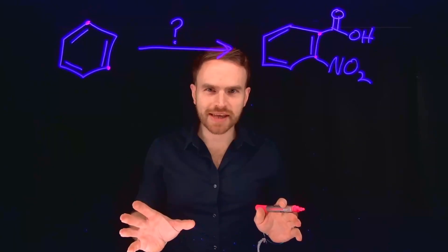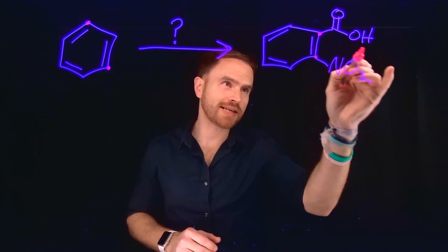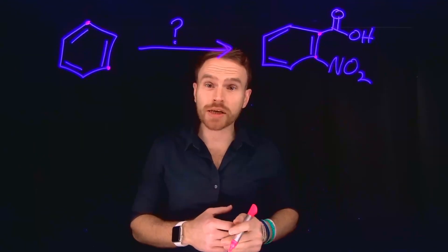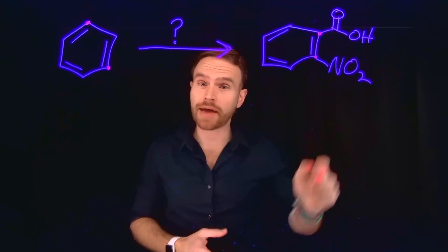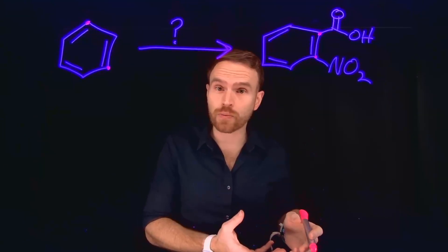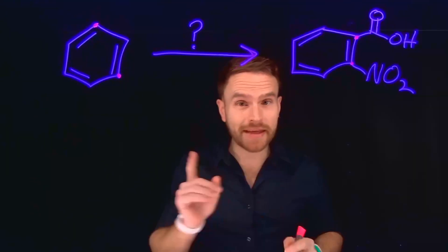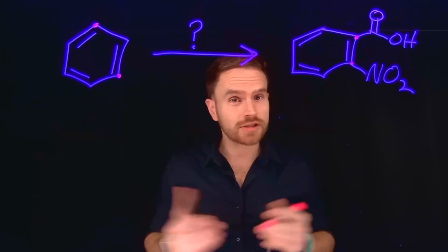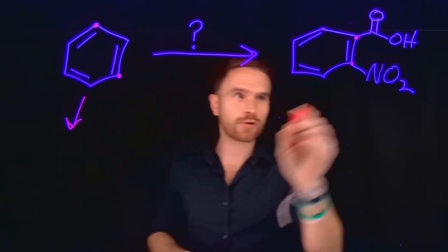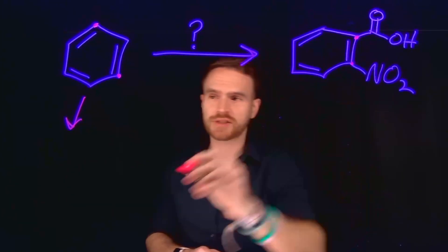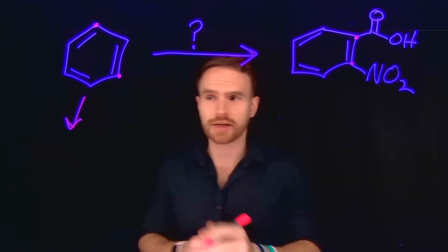Considering the retrosynthetic analysis, we need to end up with a carboxylic acid, which we can obtain by oxidation of an alkyl group. That alkyl group would be an ortho-para directing functional group, and that's a great start. So we'll actually begin by first placing an alkyl group at this position, which we can do using Friedel-Crafts alkylation.